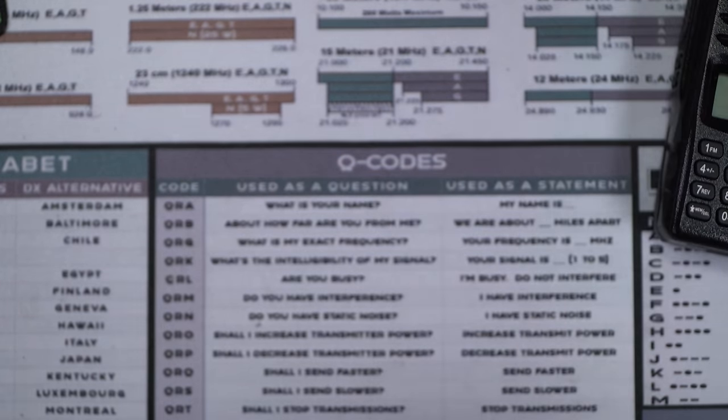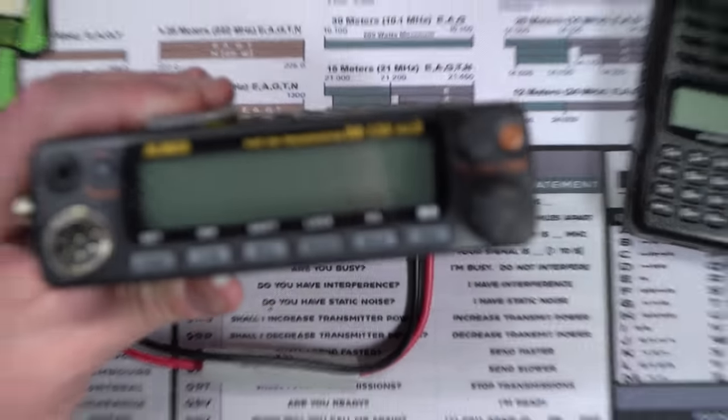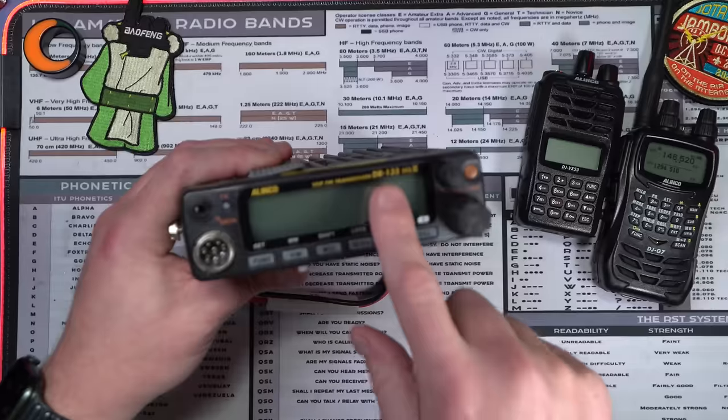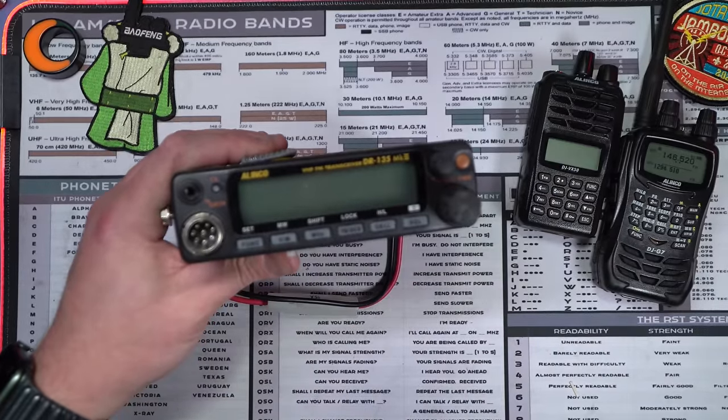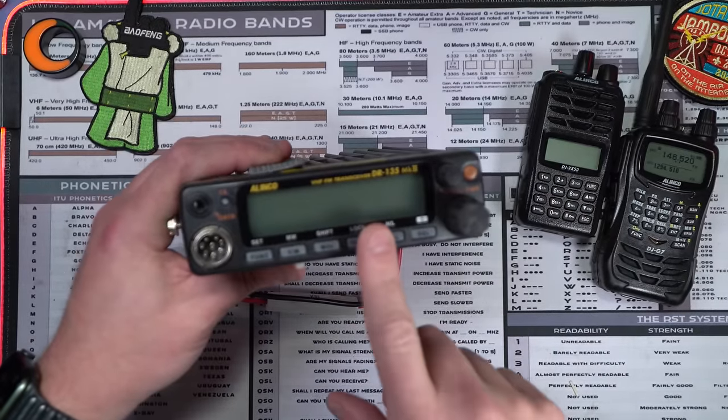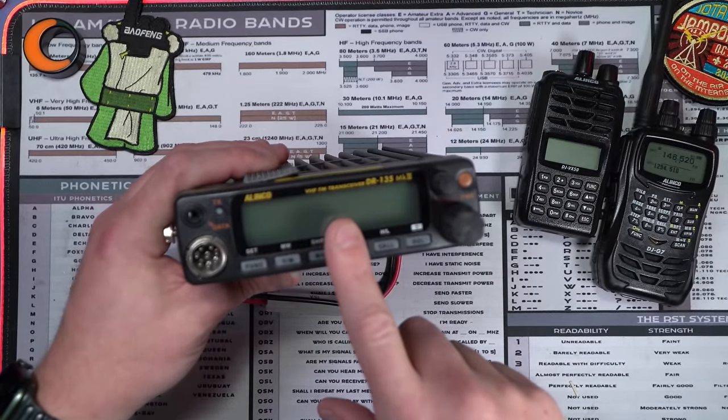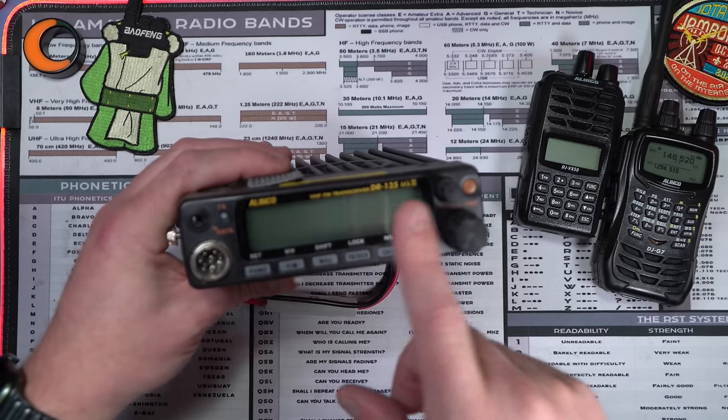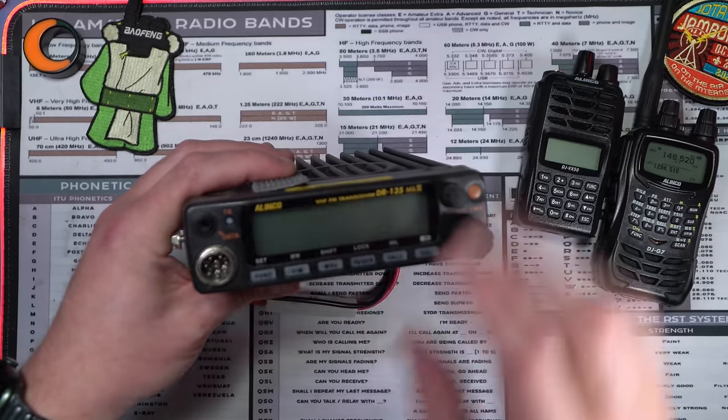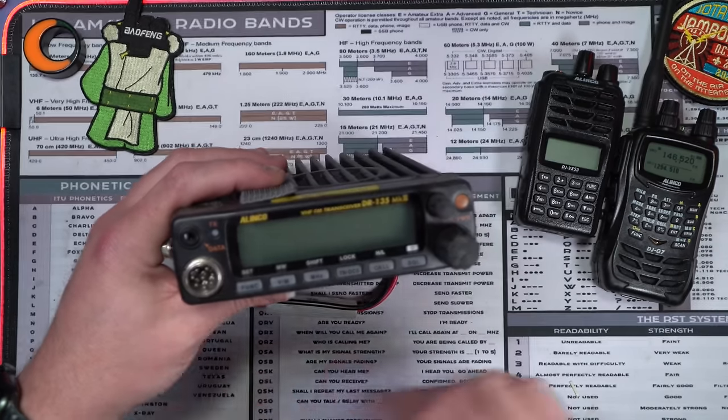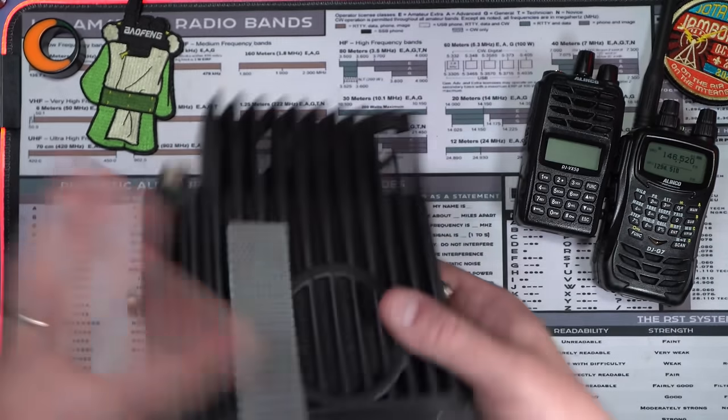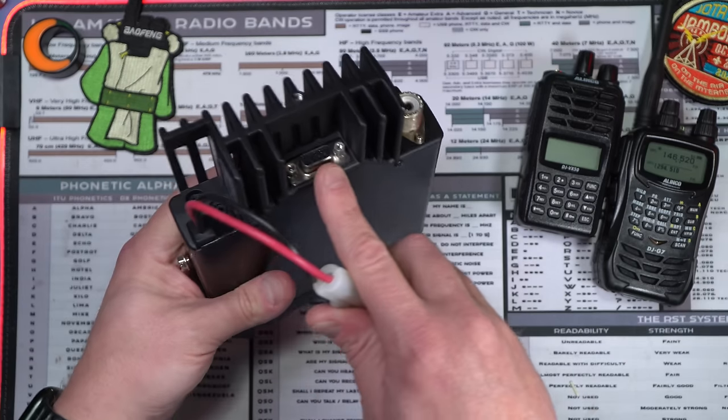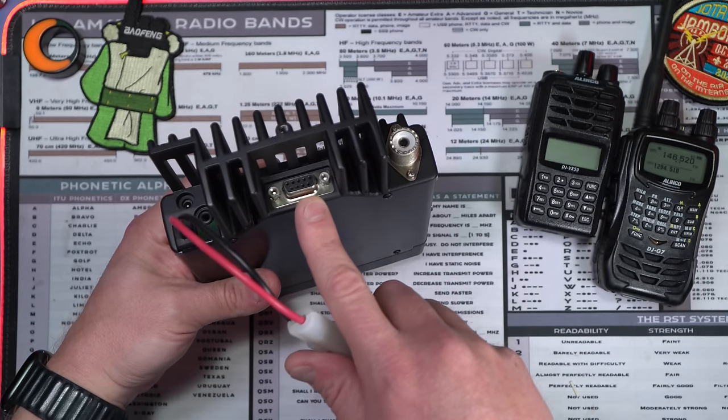Case in point, still one of my favorite radios for those of you that are into APRS or packet radio, the Alinco DR-135 series. This is the two meter only radio. They have radios that'll do 220 megahertz, they'll go to 70 centimeters, six meters. All kinds of different options. Mono band, but also designed to accept TNCs for packet radio.